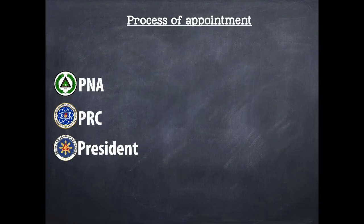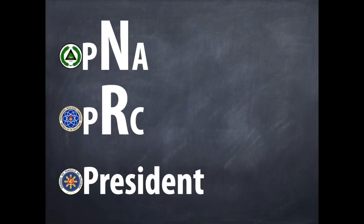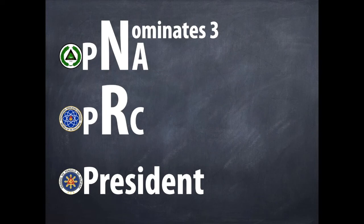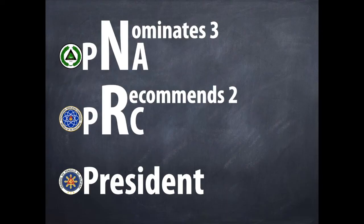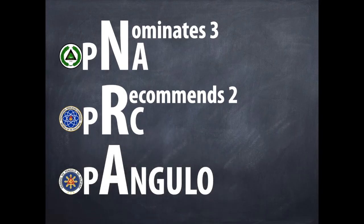At para mas madali nating matandaan, gamitan na natin ito ng mga pinagbabawal na teknik sa nursing review. Now lakihan natin ang mga second letters. It is the PNA who will nominate 3 members. And it is the PRC who will recommend 2 out of those 3 nominees. Pero may problema tayo sa President. Gawin natin siyang Pangulo. Kasi ang Pangulo ang mag-a-appoint ng isa sa mga members ng BON.